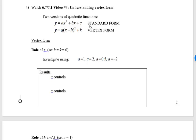You can have a quadratic version written in what's called standard form, y equals ax squared plus bx plus c, or it can be written in vertex form, y equals a parentheses x minus h squared plus k. They're both important.